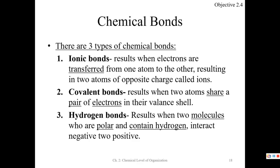Chemicals, remember, are two or more atoms bonded together, and what we can do is put these together and make larger things called molecules or compounds. To build them, we need chemical bonds. Chemical bonds — ionic bonds — result when electrons are transferred from one atom to another, resulting in two ions that are oppositely charged that form a bond.